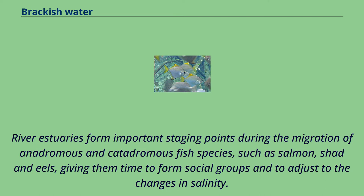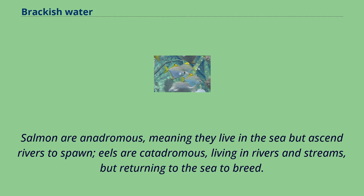River estuaries form important staging points during the migration of anadromous and catadromous fish species, such as salmon, shad, and eels, giving them time to form social groups and to adjust to the changes in salinity. Salmon are anadromous, meaning they live in the sea but ascend rivers to spawn. Eels are catadromous, living in rivers and streams but returning to the sea to breed.